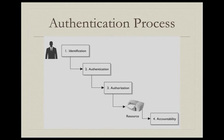Access control is all about allowing the right people to get to information resources while stopping the wrong people from getting to those resources. The authentication process, as depicted here in a graphic from Sean Harris's CISSP All-in-One Study Guide, shows that there are five different things that happen during an authentication process.